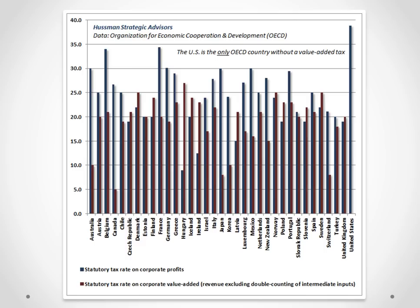You can see this in the following charts. The first chart shows tax rates in OECD countries. Most of these countries have two bars, except the U.S. The blue bar is the tax rate on corporate profits, and the red bar is the tax rate on corporate value-added — essentially corporate revenues excluding double counting. Corporate revenues are much larger than corporate profits, but in the U.S. there's no value-added tax at all. So yes, the tax on corporate profits is higher in the U.S. than elsewhere, but that's an apples-to-oranges comparison because the U.S. is the only country without a value-added tax.